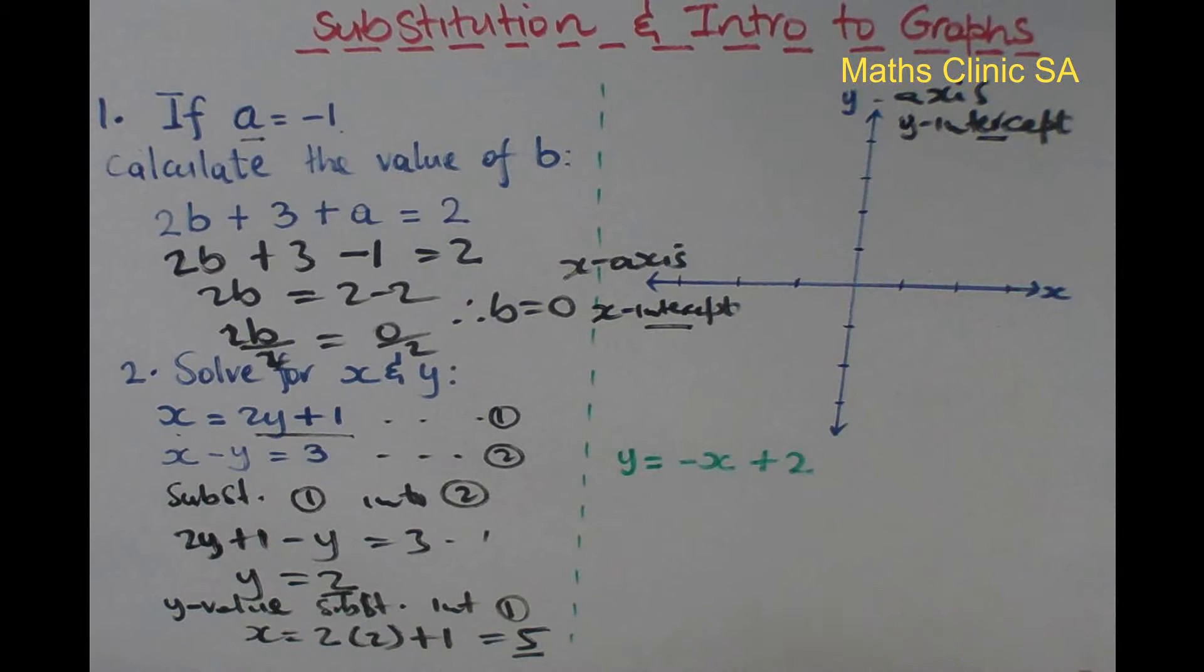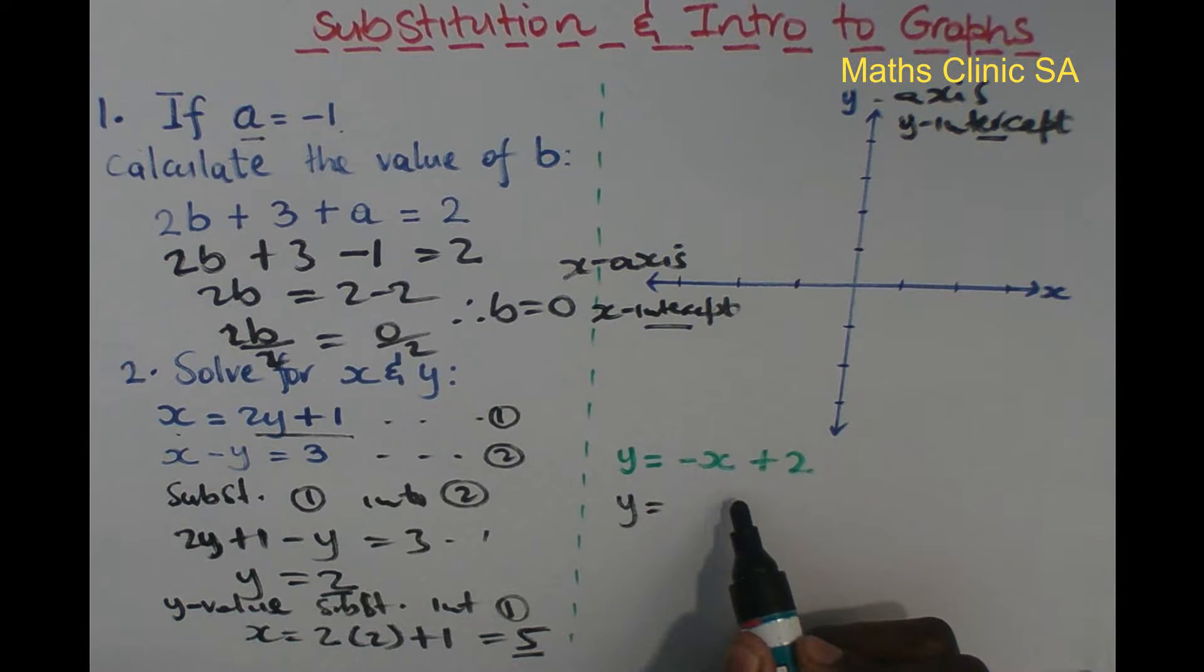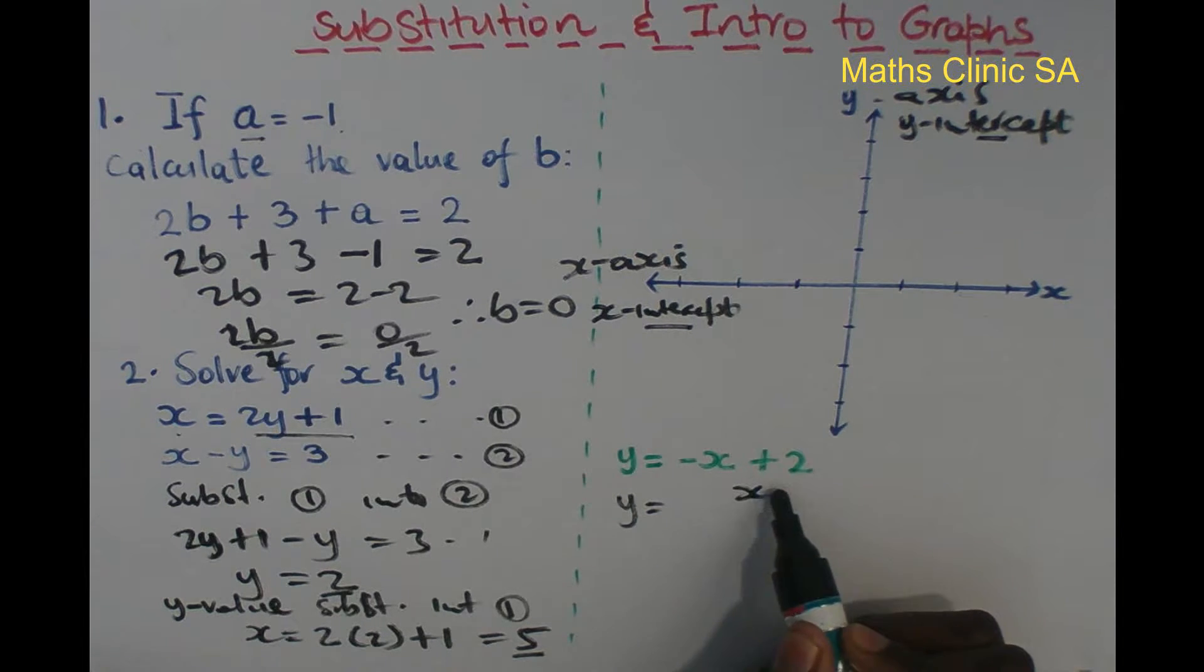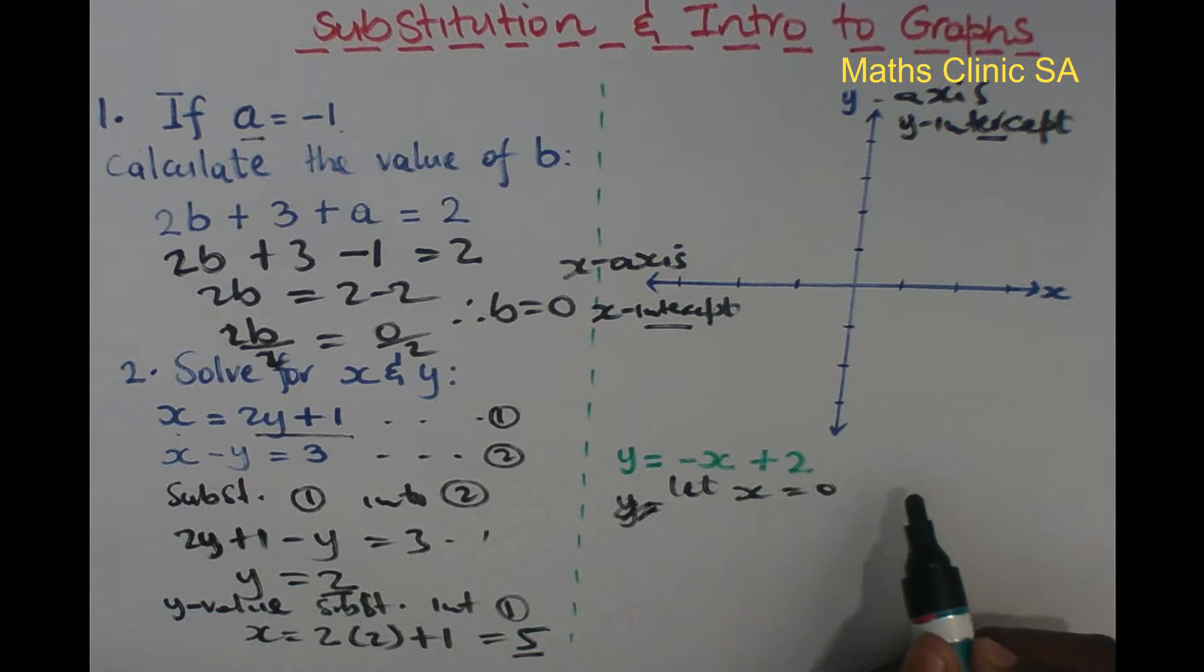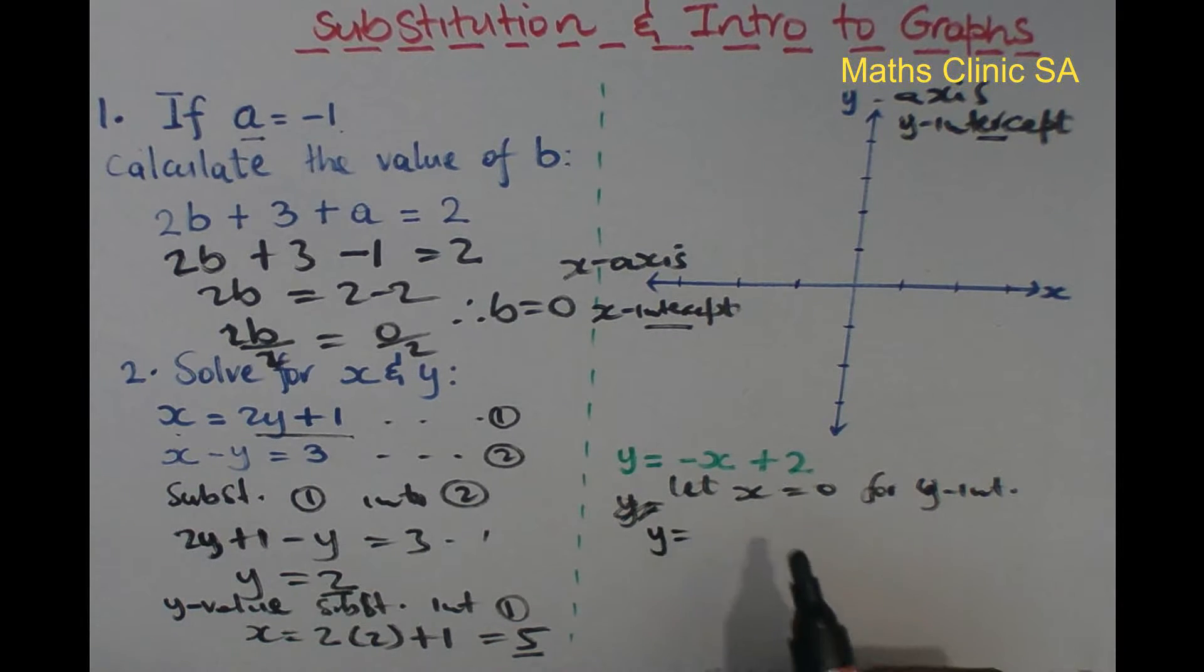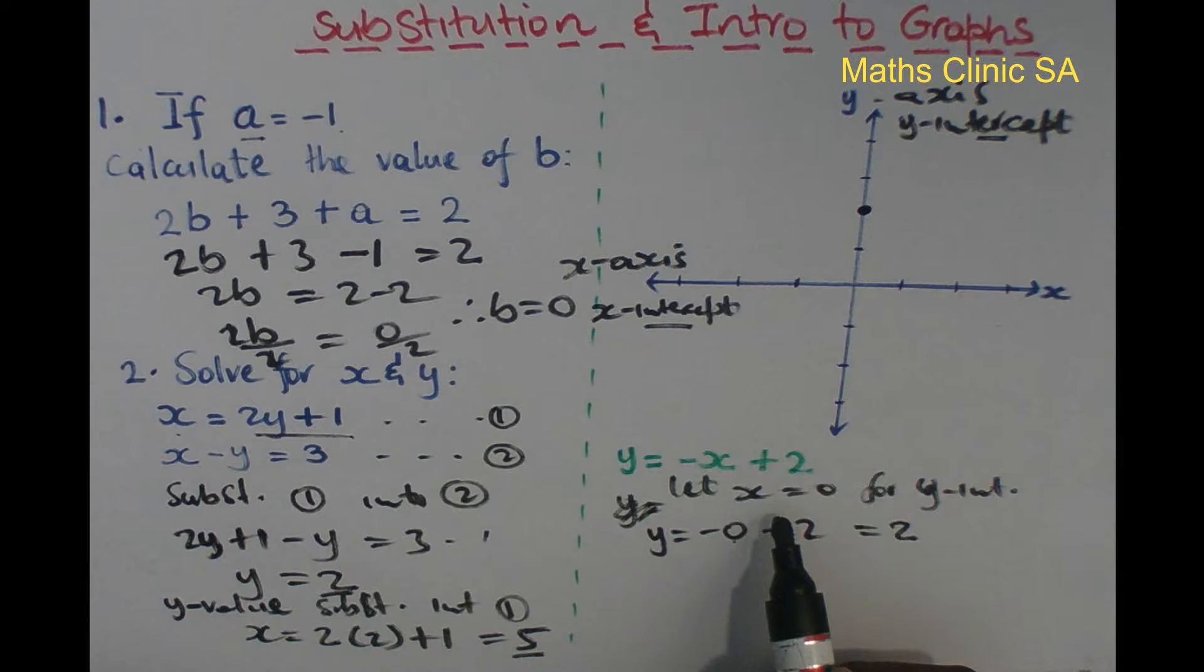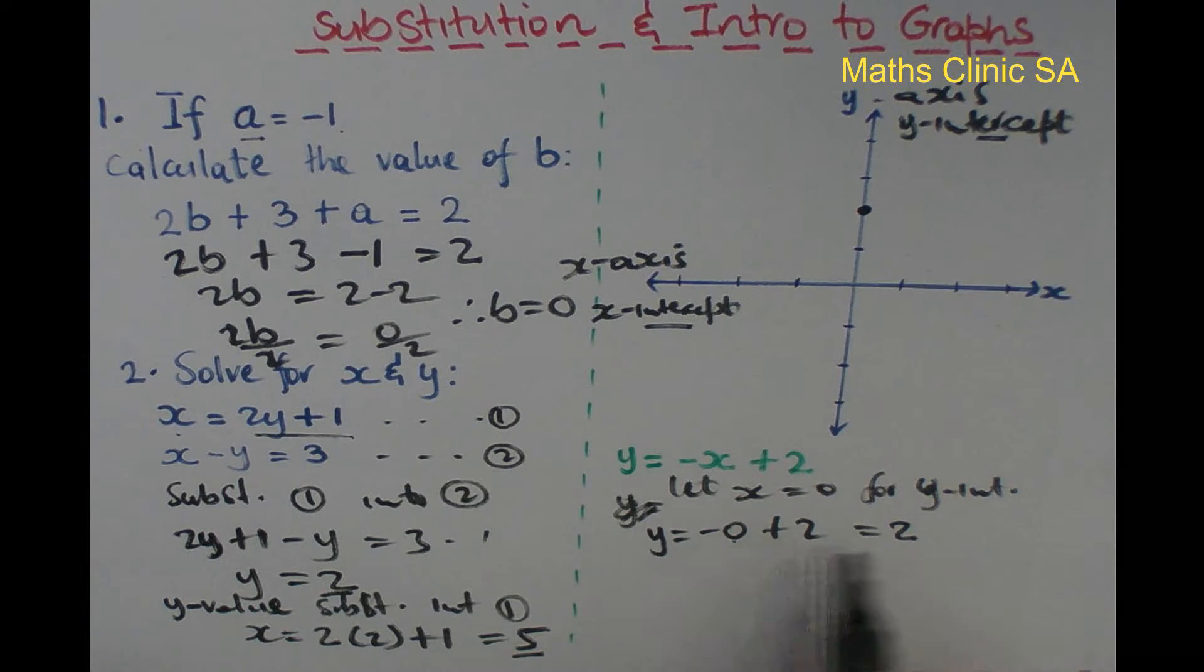For the equation y = x + 2, to find the y-intercept, we let x = 0. So y = 0 + 2 = 2. The line cuts the y-axis at point (0, 2).